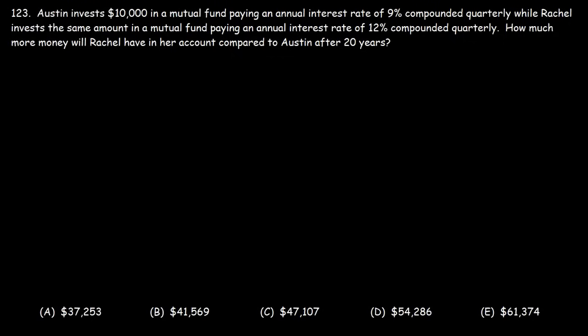How much more money will Rachel have in her account compared to Austin after 20 years? In this problem, everything is the same except the interest rate. The investment is still $10,000 and the investment period is still 20 years. The rate at which it's being compounded is quarterly. So we're going to see the effect of a higher interest rate on the growth of an account.